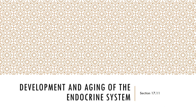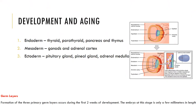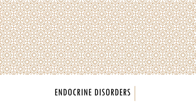Now let's examine the development and aging of the endocrine system. The endoderm produces the thyroid, parathyroid, pancreas, and thymus. The mesoderm gives rise to the gonads and adrenal cortex. The ectoderm gives rise to the pituitary, pineal gland, and adrenal medulla. There are a variety of homeostatic imbalances of the endocrine system.